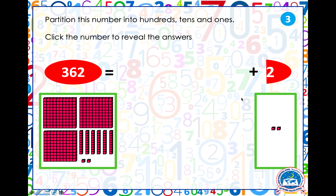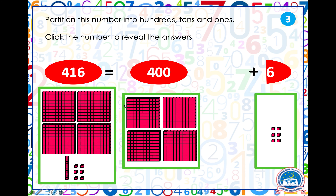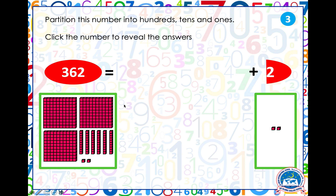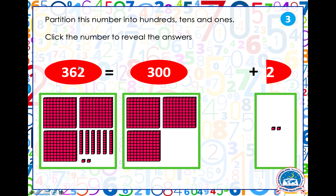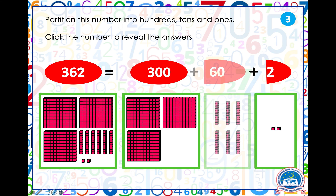Now we can also break down these numbers into hundreds, tens and ones. Here we are breaking down the number 362. How many hundreds does the number 362 have? The number 362 has 300, six tens which makes 60, and two ones.